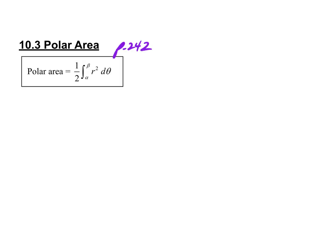This formula is the formula for polar area. This is on page 242 in your book. If you want a more in-depth explanation of where this comes from, I posted a video from Khan Academy where he derives that formula. For all intents and purposes, you don't really need to know where it comes from in order to do these problems, but it might be worth watching that video later.